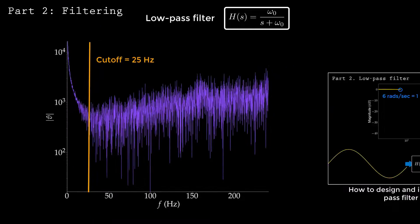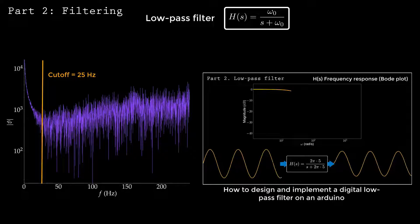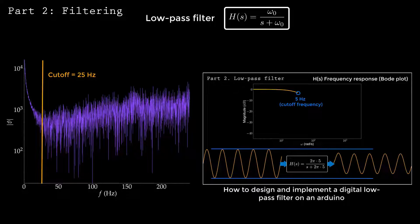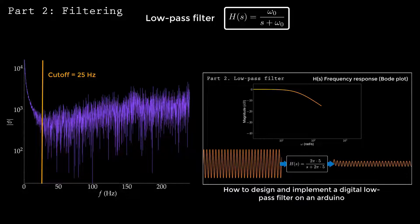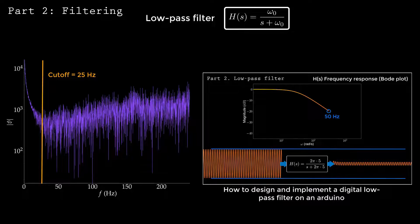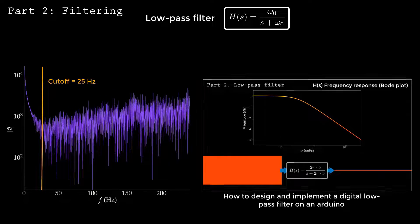Creating the discrete implementation of the filter requires that you use a library or do some ugly math. I made another video that teaches you the details, so if you want to create your own filter, check it out. Using the method I showed in that video, I created this discrete update equation for the 25 Hz low-pass filter.